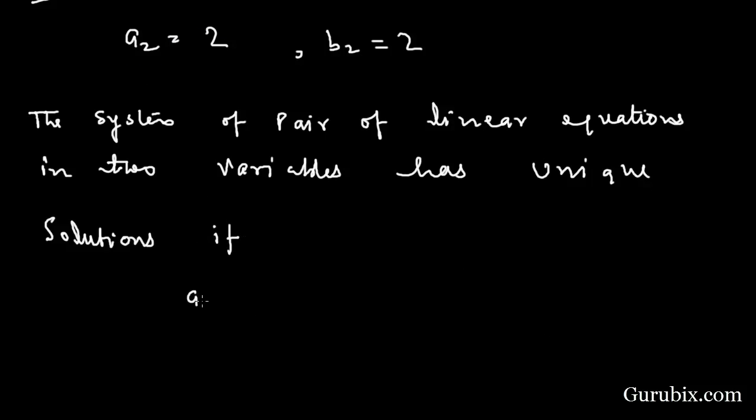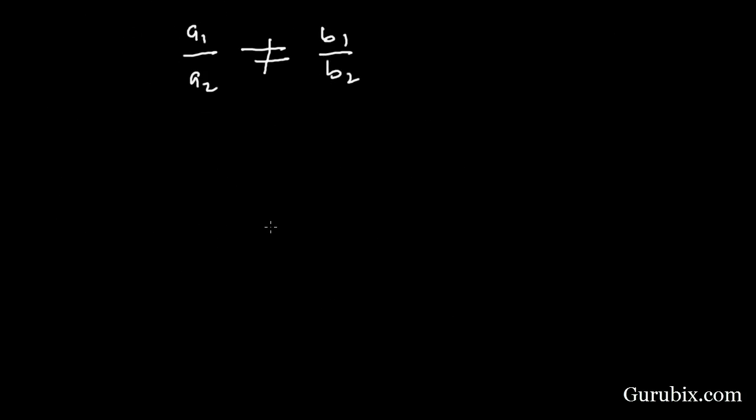This means 4 over 2 is not equal to P over 2, which means 2P is not equal to 8, which means P is not equal to 4.